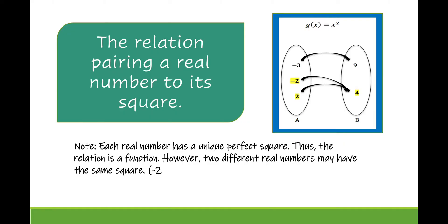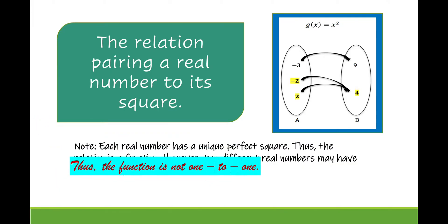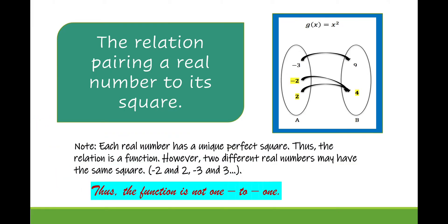However, two different real numbers may have the same square — for example, negative 2 and 2 both give positive 4, and negative 3 and positive 3 both give positive 9. Therefore, the function is not one-to-one.